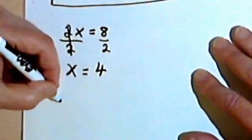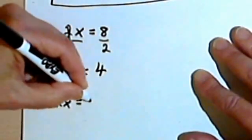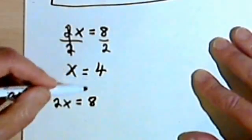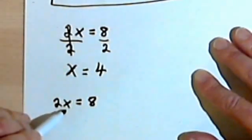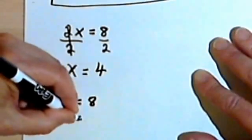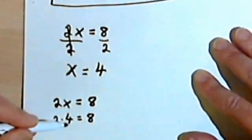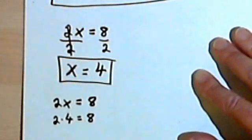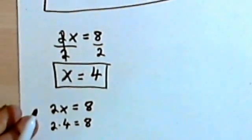Let's check and see if it works. So I had 2x equals 8. That was my original problem. If x equals 4, I can replace the 4 where I've got the x. So 2 times 4 equals 8. And 2 times 4 does equal 8. So this problem checks. The answer is x equals 4.